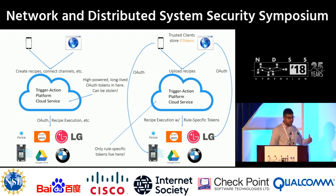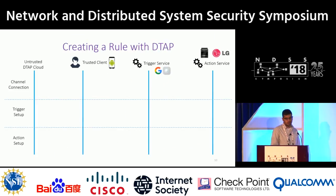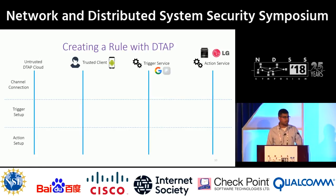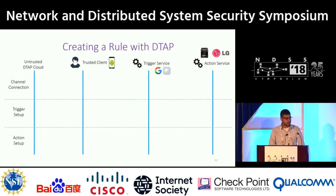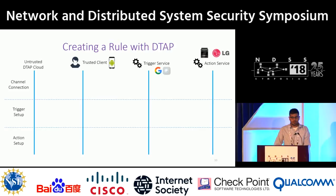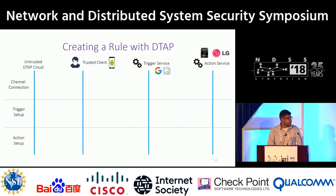Let's jump into a bit more detail and look at the protocol. I'll walk you through creating a rule with our system, called the Decentralized Trigger Action Platform, or DTAP — an implementation of the decentralized action integrity principle. We have four entities: the untrusted DTAP cloud, a trusted client (in this case an Android phone), the triggering service (the smoke detector), and the action service (the LG oven). I want to program the rule: if smoke is detected, turn off the oven.